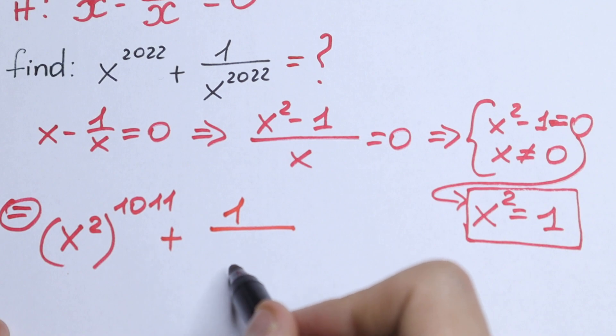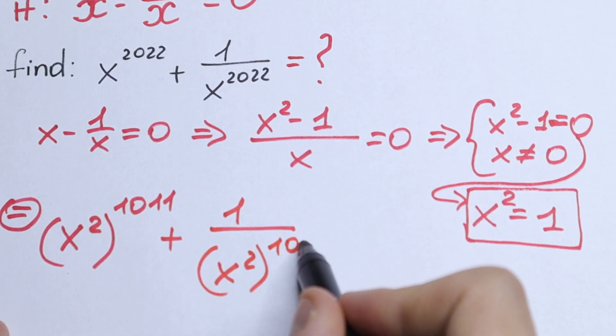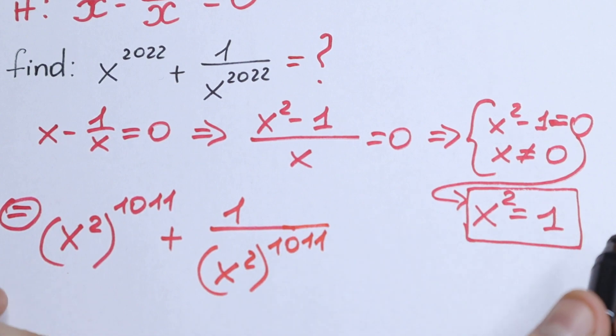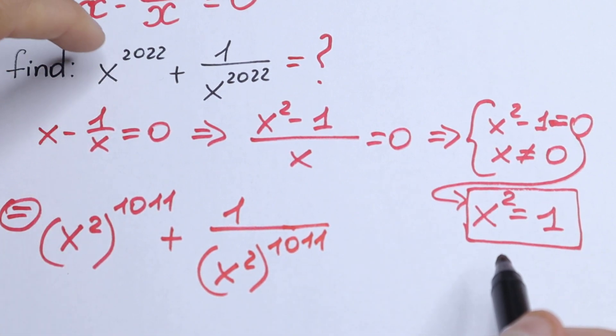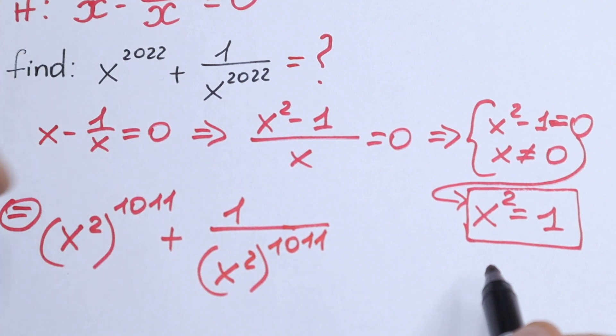And let's do the same trick right here in our denominator. 1 over x squared to the power 1011. So we just rewrite this x to the power 2022 in that way.